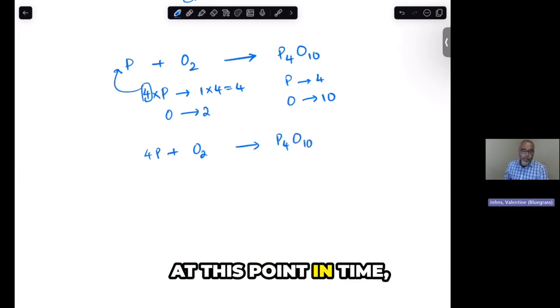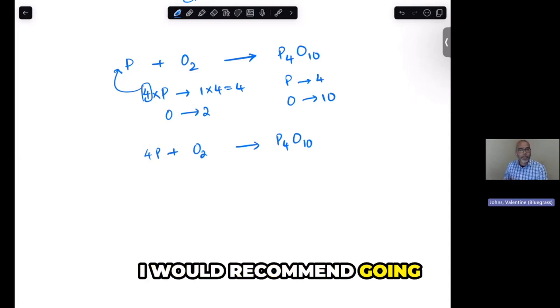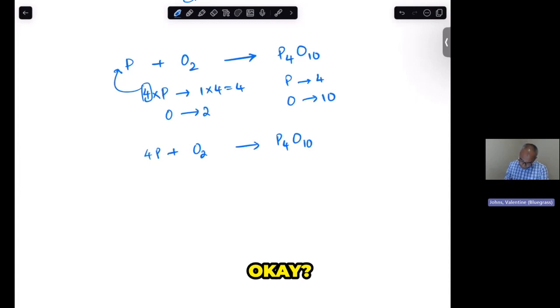Now, at this point in time, you can choose to do it one at a time. So I just chose to balance the phosphorus first, and then I'm going to go in the next step and balance the oxygen. I would recommend going about that, since we're learning and this is a new thing. But if you want to try to balance the oxygen at the same time, you can do that. Just make sure you manage to keep things straight in your head.